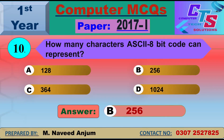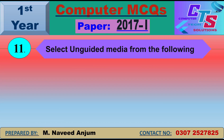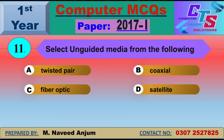Question number 11: Select unguided media from the following. We must identify which option is unguided media. Twisted pair cable is guided media — it uses a physical connection. Unguided media does not use a physical connection. The right answer is satellite, as satellite connects signals with stations wirelessly.